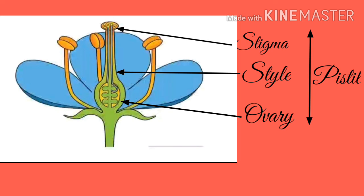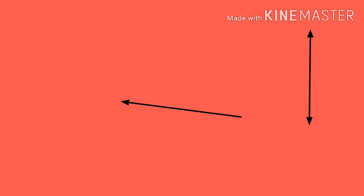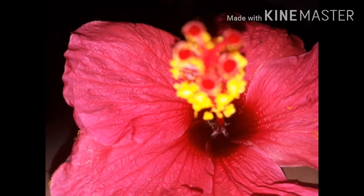Next, come to the female part called pistil. Here you can see stigma, style, and ovary — totally called pistil. It is the female reproductive part. Cut a hibiscus flower and remove all the stamens, that is the male part of a flower, and then identify the parts of the pistil.